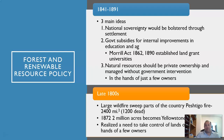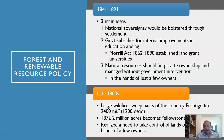By the 1800s we started thinking more about policy and what we wanted to have happen. There were three main ideas in this mid-to-late 1800s period. The first is that national sovereignty would be bolstered through settlement — the idea that we could become a great nation by spreading out and settling in all these different places.